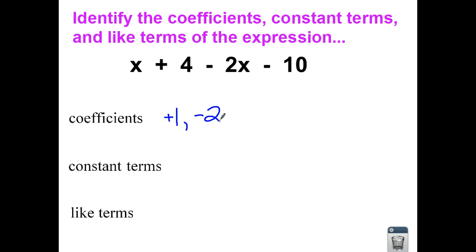The next part are the constant terms. Now, the constant terms are the integers in the line that don't have a variable attached to it. So if I'm going from left to right, I can see a 4, and I can see a negative 10. So right now, we're just listing these items.